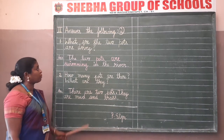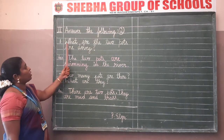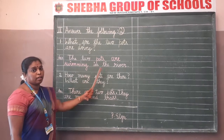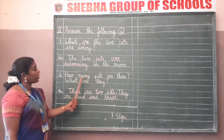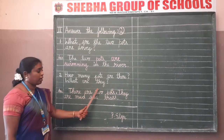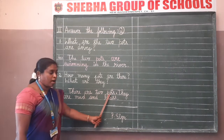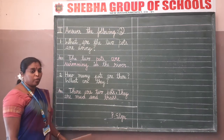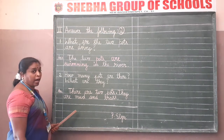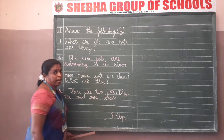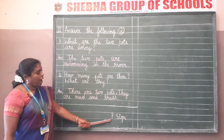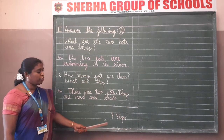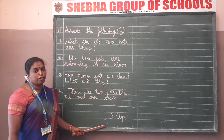Now again I am going to read the question and answer. Number one: 'What are the two pots doing?' Answer: 'The two pots are swimming in the river.' Second one: 'How many pots are there? What are they?' Answer: 'There are two pots. They are mud and brass.' Now you have to finish the Roman numeral by drawing a line with a scale and pencil, and write parent signature. Parent signature is very compulsory - don't forget to get the parent signature from your parents.